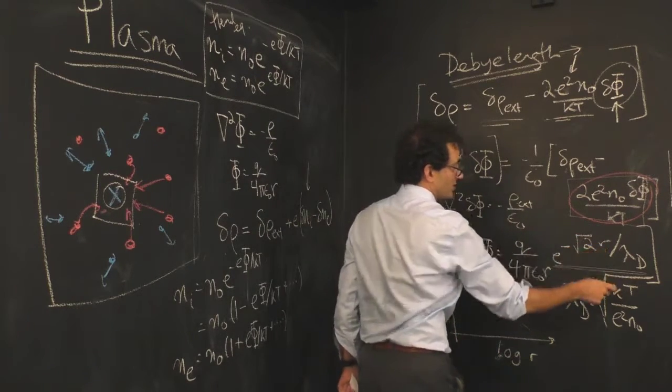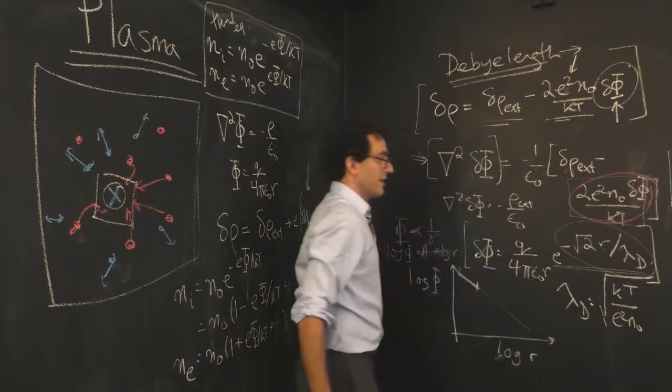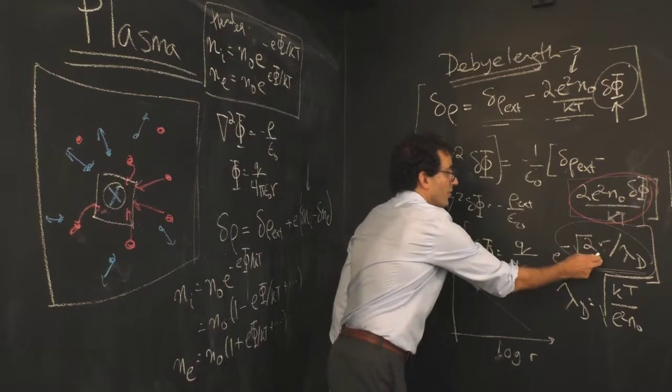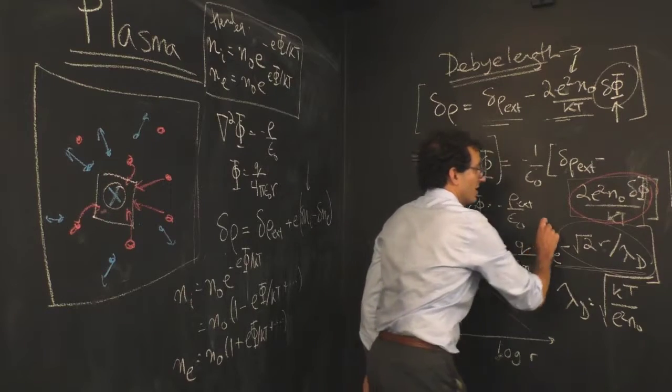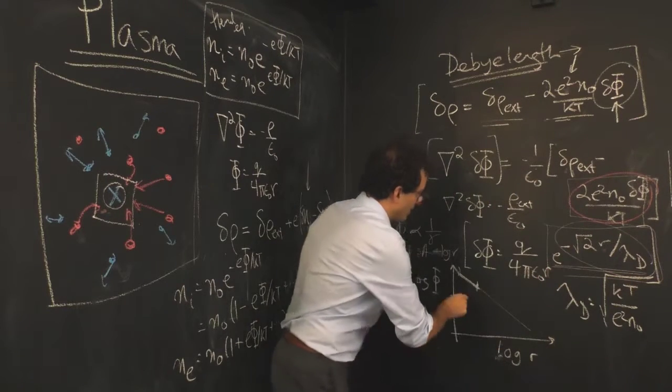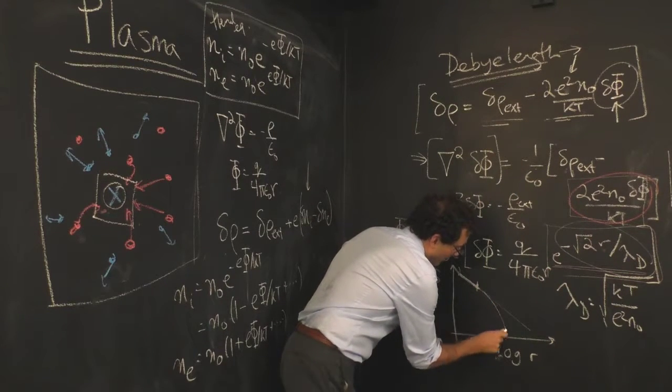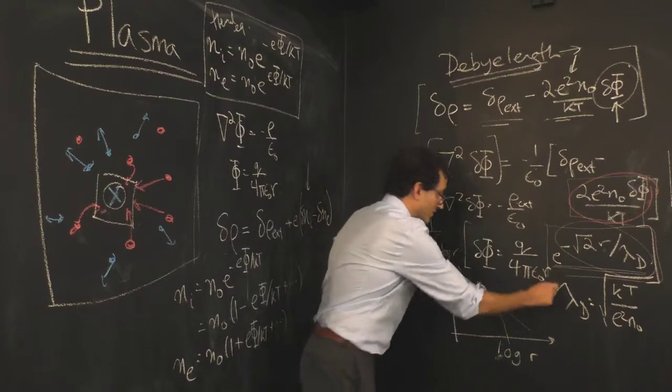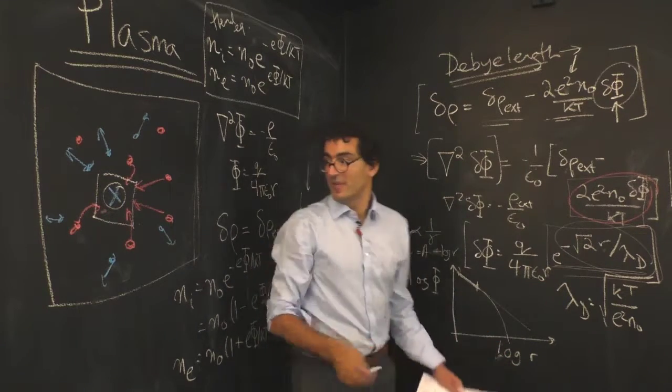But as r gets larger and larger, this term becomes more and more negative, and so the effect of that charge at long distances starts to drop away. It drops away exponentially fast. In a plasma, if you put in a test charge and go far enough away.